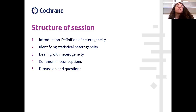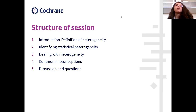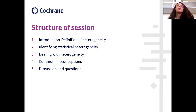We're going to have a small introduction and present the definition of heterogeneity. We're going to present some ways of identifying statistical heterogeneity in a systematic review, some ways of dealing with heterogeneity, and some common misconceptions we see in the literature surrounding heterogeneity. Finally, we'll have a small discussion and answer any of your questions.